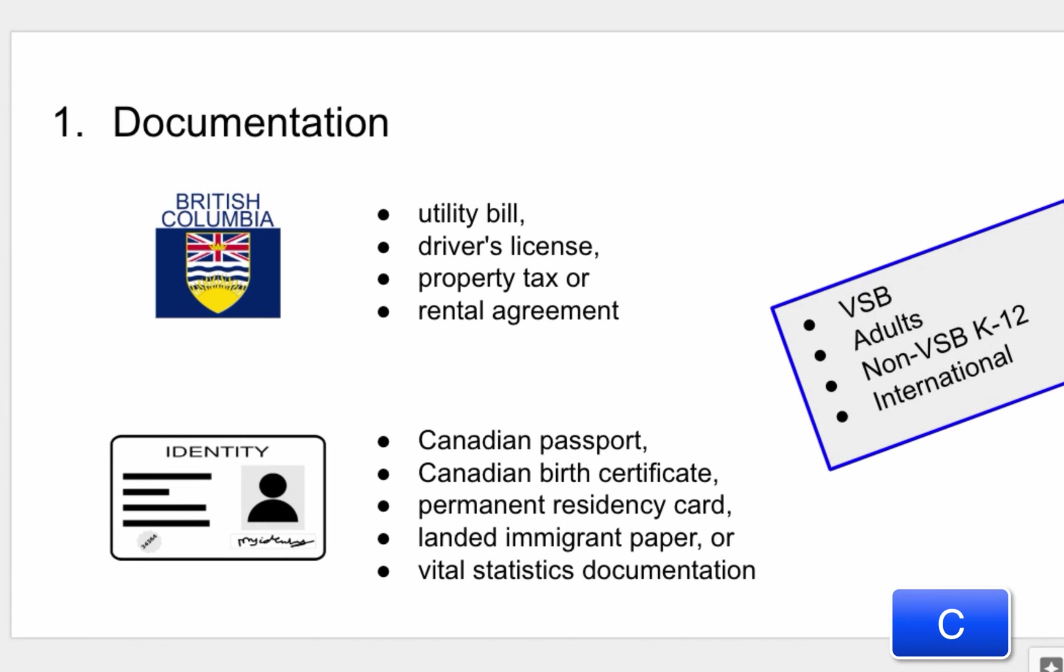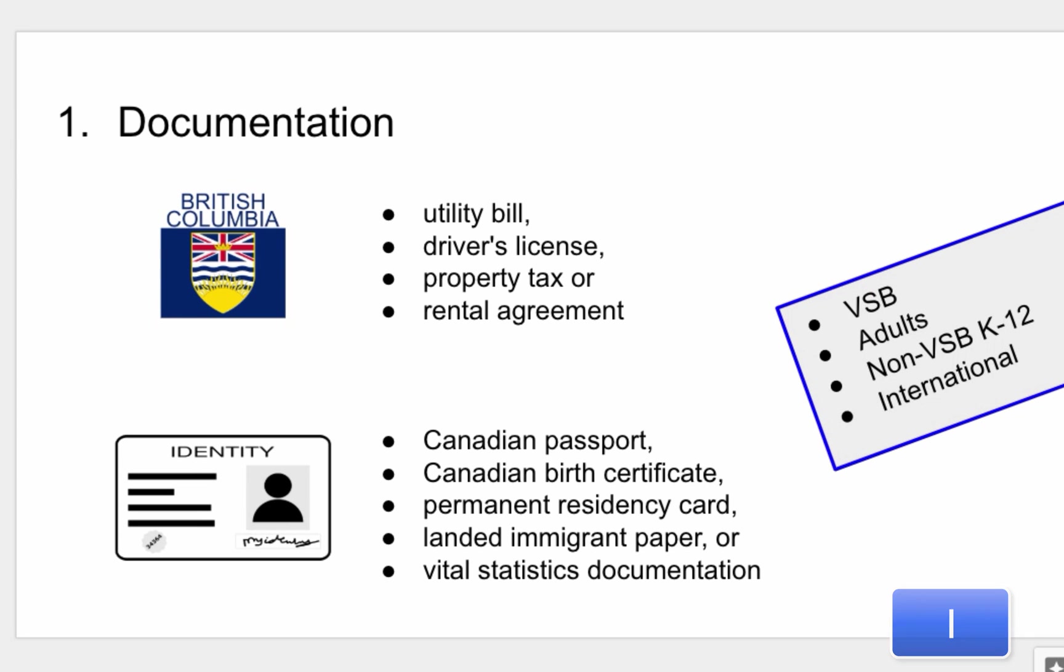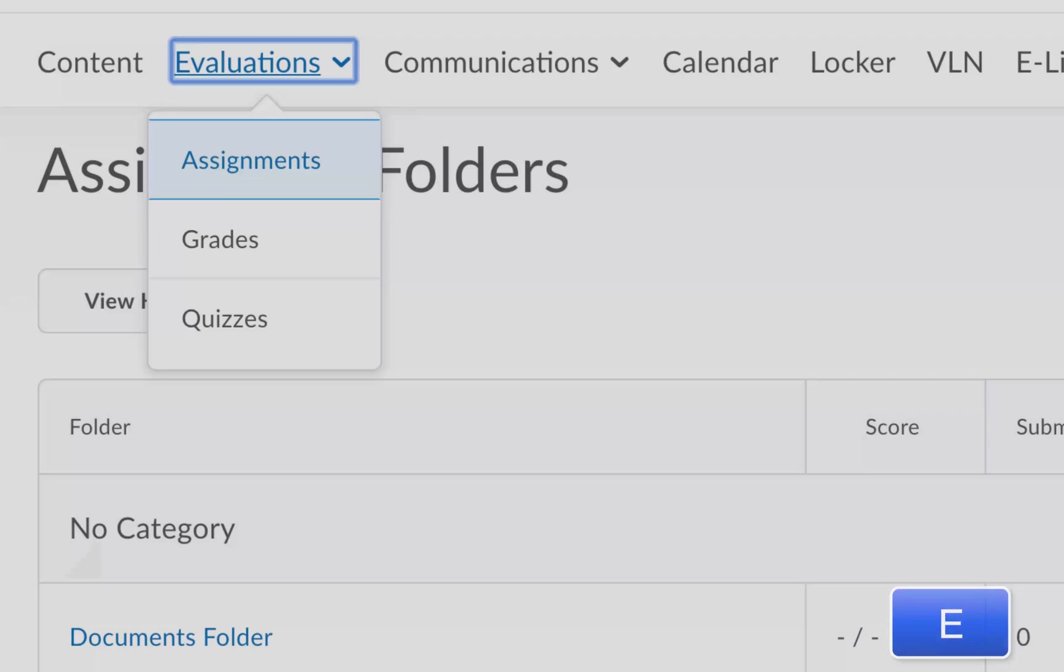The first thing you need to do is determine are you a VSB student, an adult non-VSB K-12 student, or an international student, and read the instructions very carefully to figure out what you need to submit. If you are a VSB student you do not need to submit anything. The instructions can be found in the assignments folder. Click on evaluation assignments and then documents.